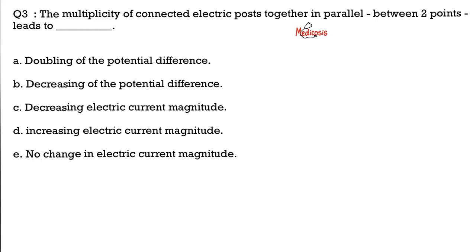Here's the third question for you. The multiplicity of connected electric posts together in parallel between two points leads to what? Is it A, doubling of the potential difference, or B, decreasing the potential difference, C, decreasing the electric current magnitude, D, increase electric current magnitude, or no change in the electric current magnitude? Please let me know your answer in the comments.